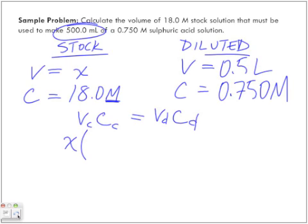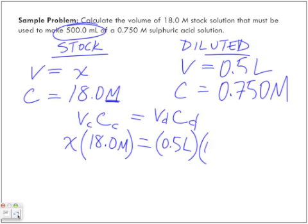is X multiplied by 18.0 moles per liter equals to 0.5 liters times our concentration, which is 0.750 moles per liter.